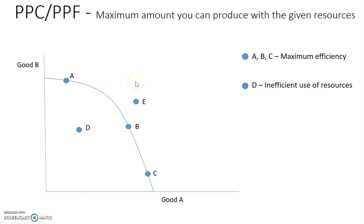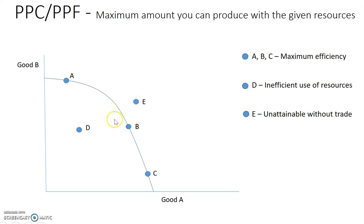Point E is beyond the maximum amount you can produce with given resources. A great way to describe it is that this is unattainable without trade. You can't get there on your own — you have to specialize in what you're good at. If you have the least opportunity cost in one good, meaning a comparative advantage, you trade that with another country that has a lower opportunity cost, which allows the production possibility curve to have more of both goods. So comparative advantage ties in directly with the PPC.